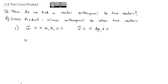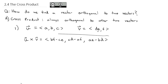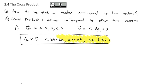If I want to calculate the cross product of u crossed with v, the way we calculate that is we take bf minus ce to get the x component, cd minus af to get the y component, and ae minus bd to get the z component. While this technically is the formula for the cross product, and if you really like memorizing formulas you can memorize this, I find it very difficult to memorize.